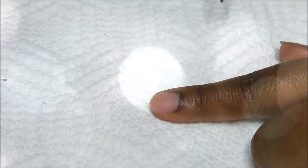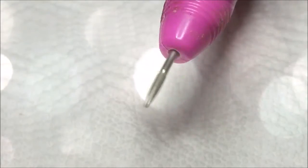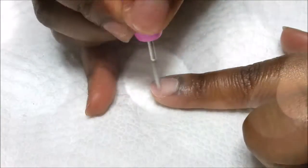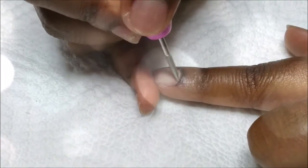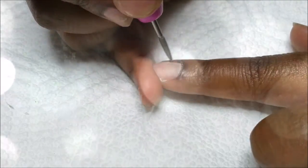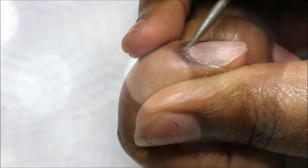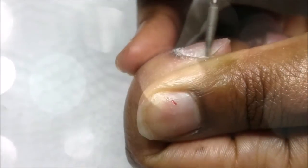Now I'm going to take the cuticle bit and hook that up to my e-file to clean off the cuticle area, really get in there and make sure it's nice and clear so that my acrylic can adhere to it perfectly and doesn't cause any lifting.